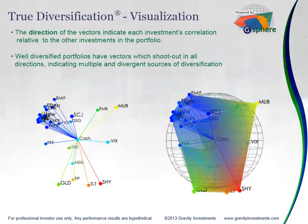Diversification is visualized within the true diversification process, and the visualization is directly intertwined with the optimization. Basically what we're doing is we're mapping all these assets to find the best fit location for them, and that best fit location thus explains the level of balance that that portfolio achieves.